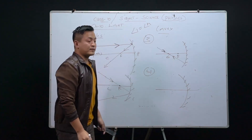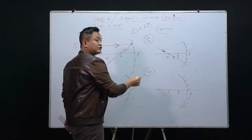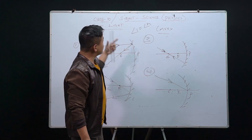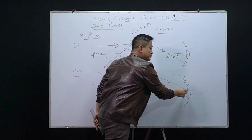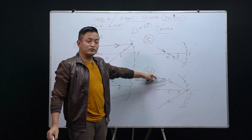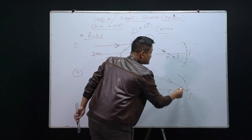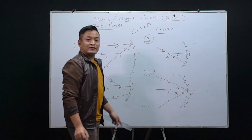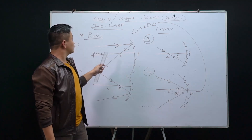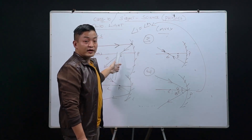Rule number four: if a ray of light is incident at the pole of the mirror, it gets reflected back to the other side of the principal axis. The angle of incidence equals the angle of reflection at the pole, so rule four follows the law of reflection. With these four rules we can draw any ray diagram for a concave mirror.